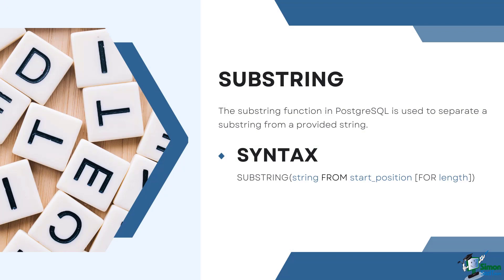The SUBSTRING function in PostgreSQL is used to extract a substring from a provided string. The syntax is: SUBSTRING(string FROM start_position [FOR length]). The function takes a string as its first argument and extracts a substring starting from the specified start_position, which is a one-based index. If the optional length parameter is provided, the function extracts a substring of that length. If not provided, it extracts all characters from the starting position to the end of the string.